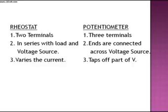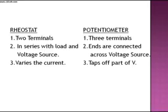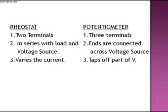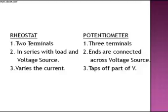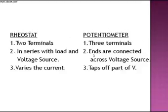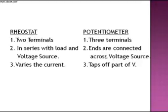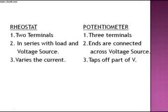A rheostat has two terminals whereas a potentiometer has three terminals. Normally a rheostat is connected in series with the load and voltage source, whereas in a potentiometer the ends are connected across the voltage source. In a rheostat it varies the current, whereas in a potentiometer it taps a part of a voltage.